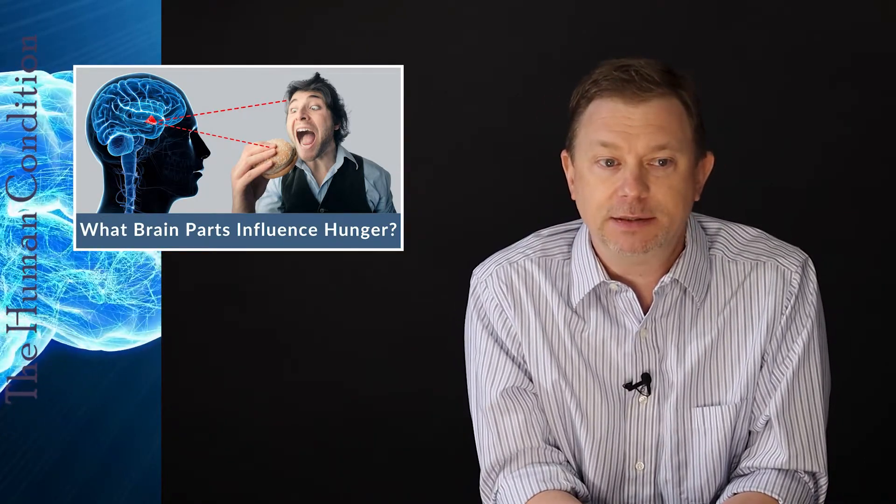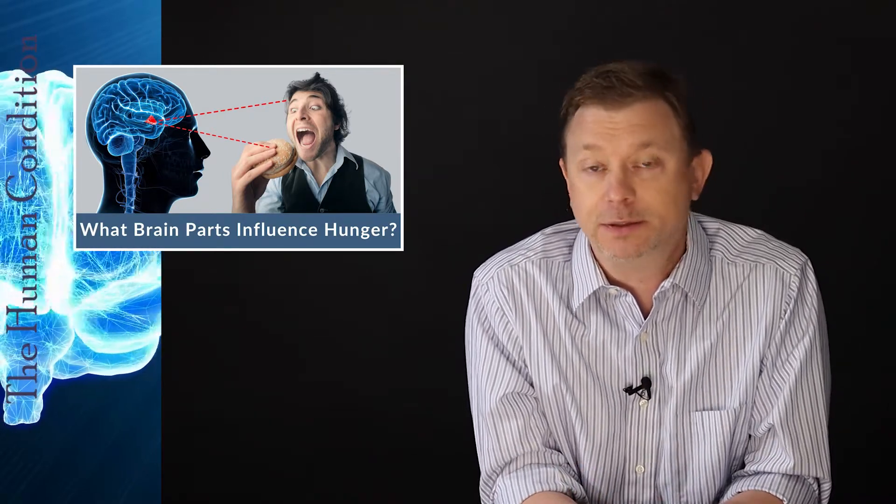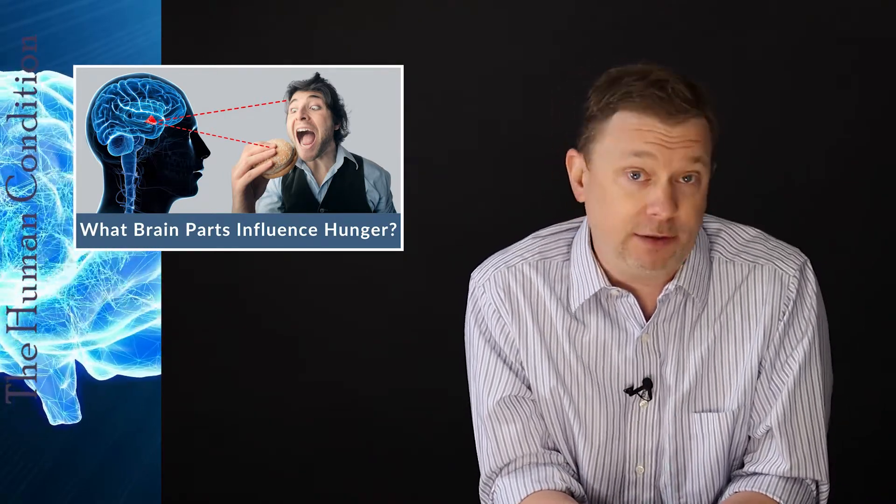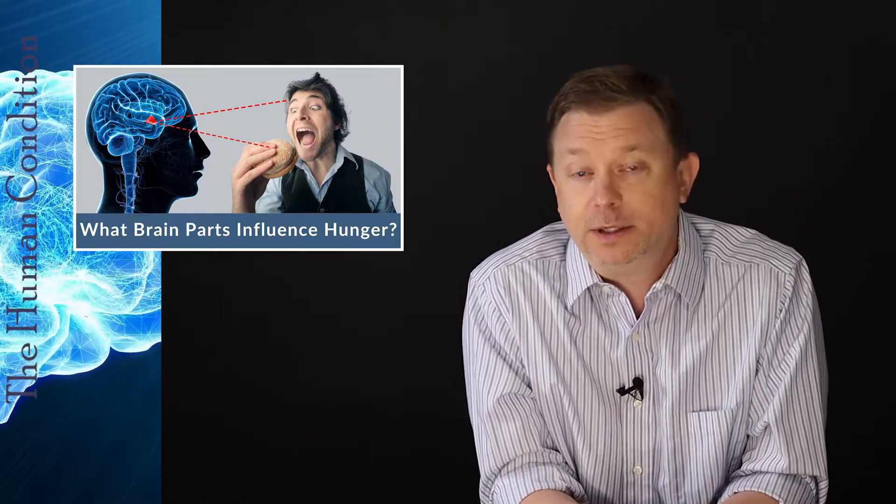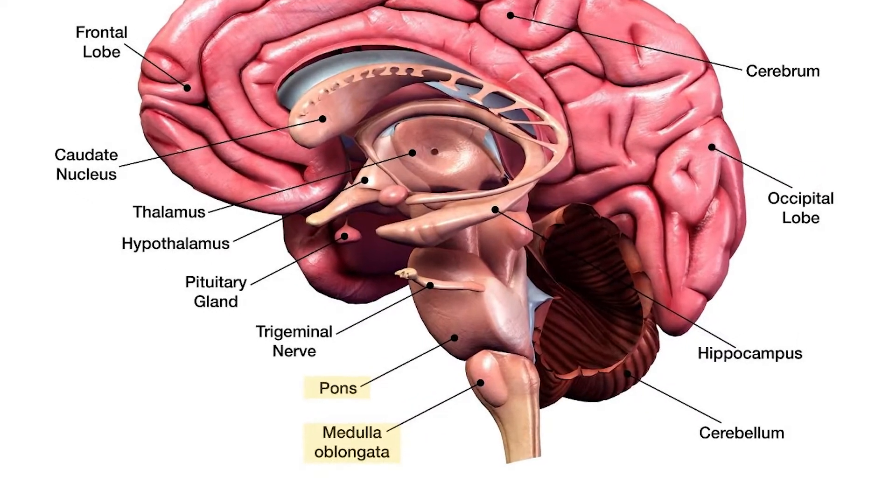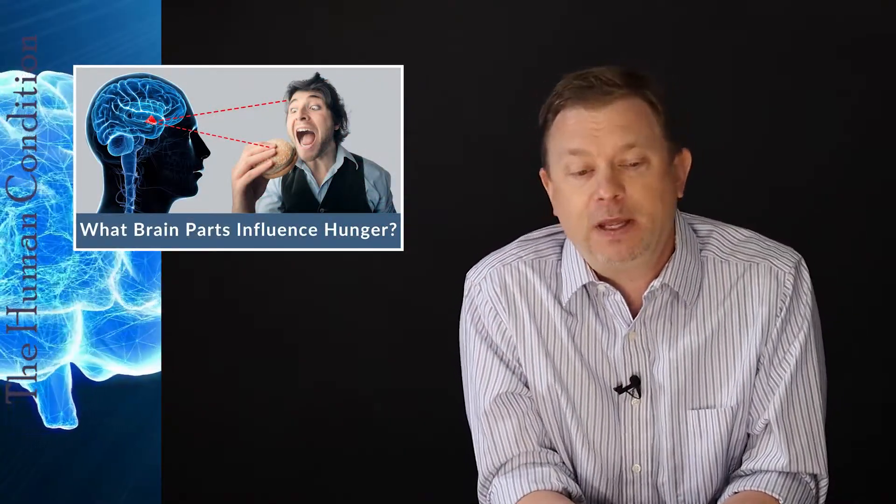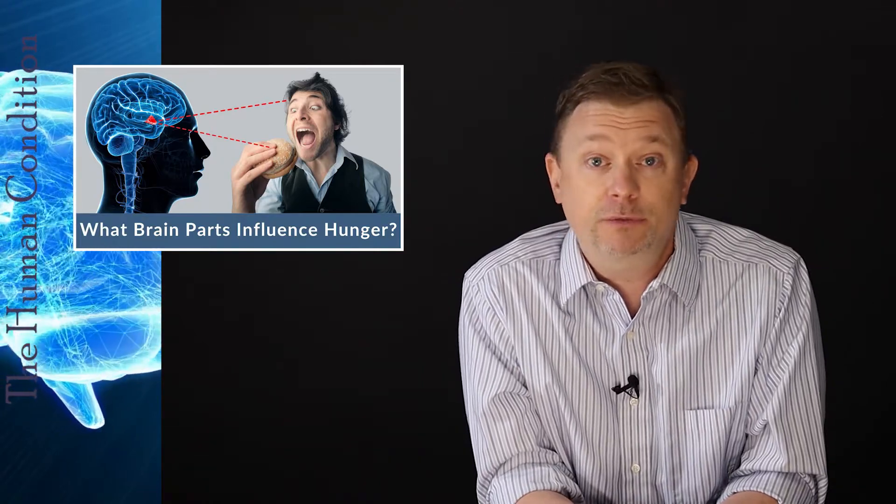The hypothalamus senses the nutrients that are in our blood and the poisons and toxins that are in our blood to some degree, although it isn't the only area that does this. Some of these functions are done a little bit lower in the brain stem, in the pons and the medulla oblongata. But for our purposes, the satiety centers are in the hypothalamus.